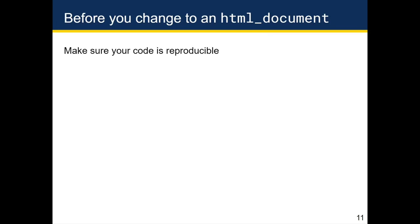When you go to knit an HTML document, it expects your code to work from the first chunk all the way to the last chunk in order. So if there are any steps that get skipped — like a variable created outside your Notebook, or a package or data set loaded outside your Notebook — when you convert it and go to knit, it won't work.